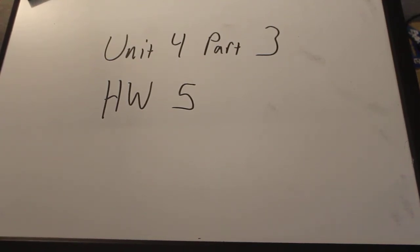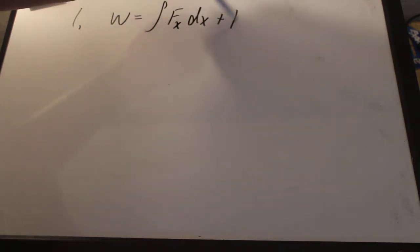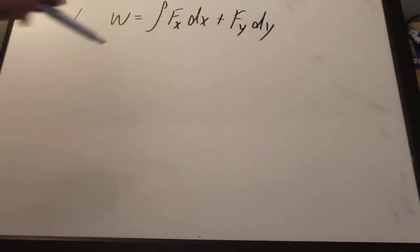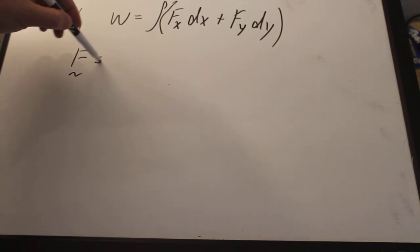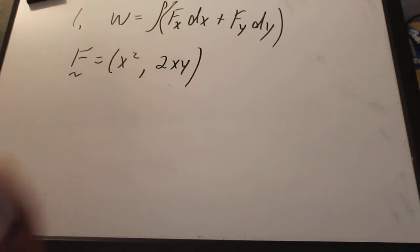Okay, I want to take a few minutes to talk about homework 5 and to work an example problem for you. So let's do it just item by item. In the first problem, you're asked to find the total work done by a force that has an x and y component. So what I want to do is solve an example using this force.